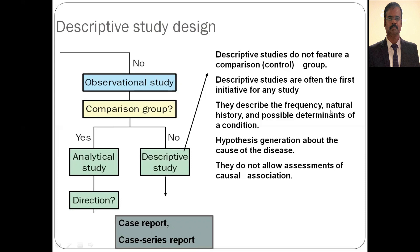Descriptive studies describe the frequency, naturalistic, and possible determinants of disease, meaning we can only formulate a hypothesis — we can only say this could be an outcome or a cause. So hypothesis generation about the cause of disease can be done in descriptive study design, but they do not allow assessment of causal association. We cannot conclude a definitive causative factor, only propose one.